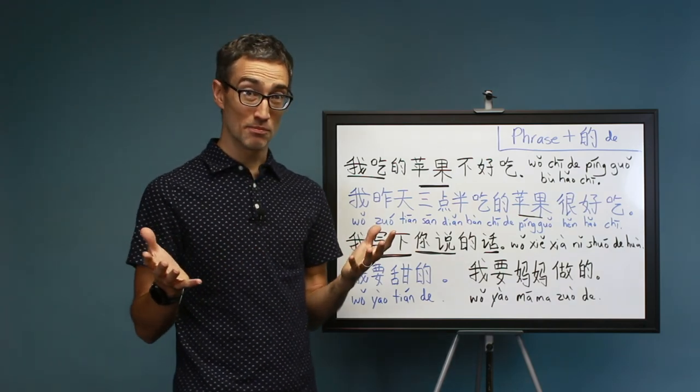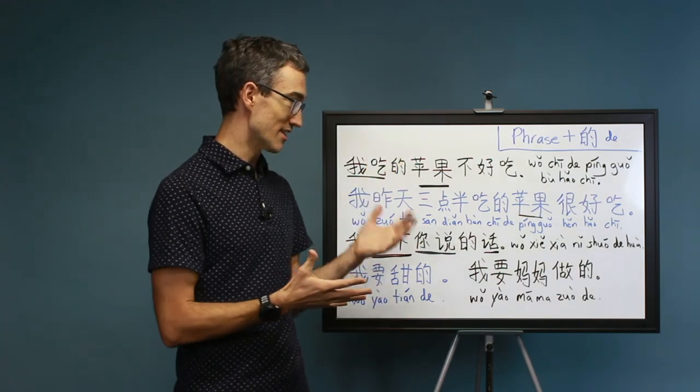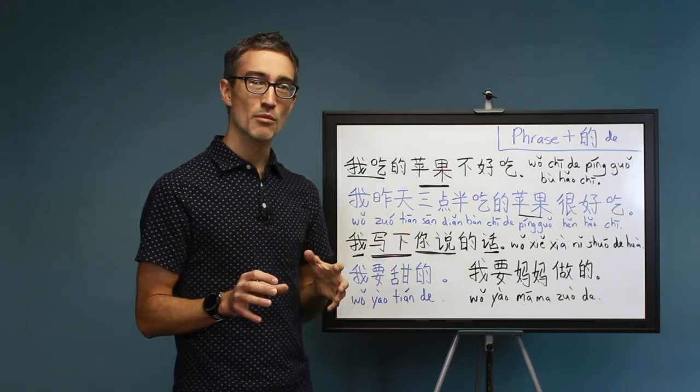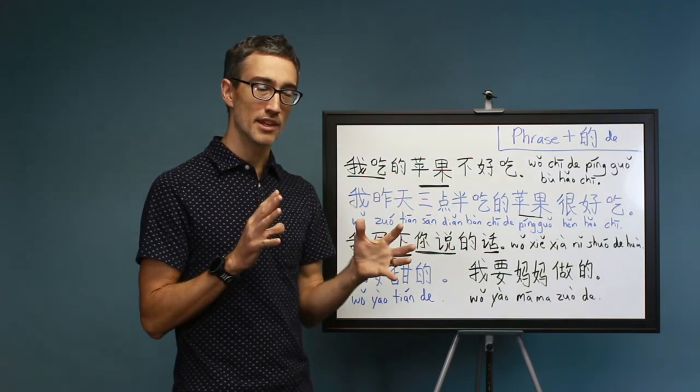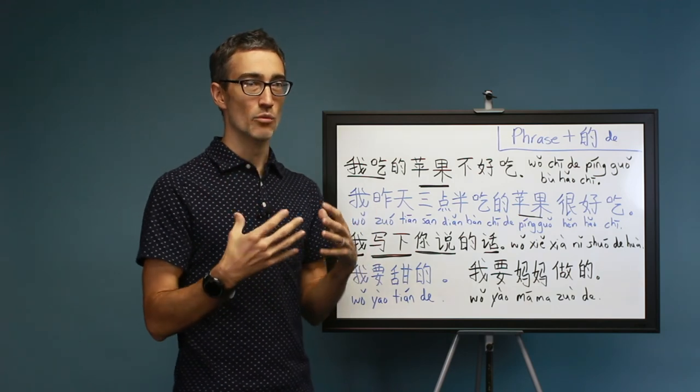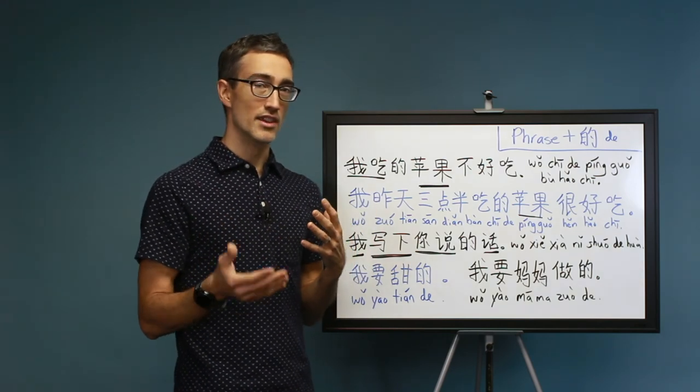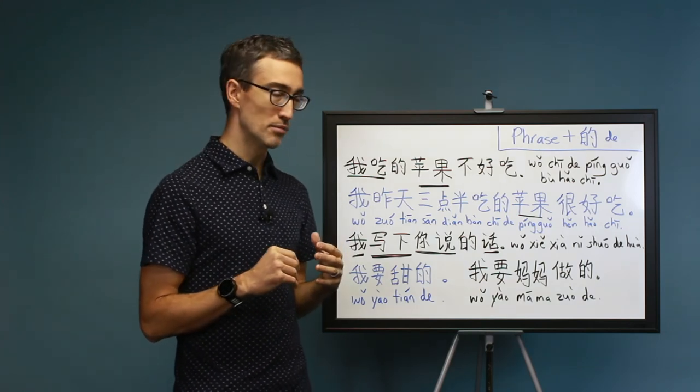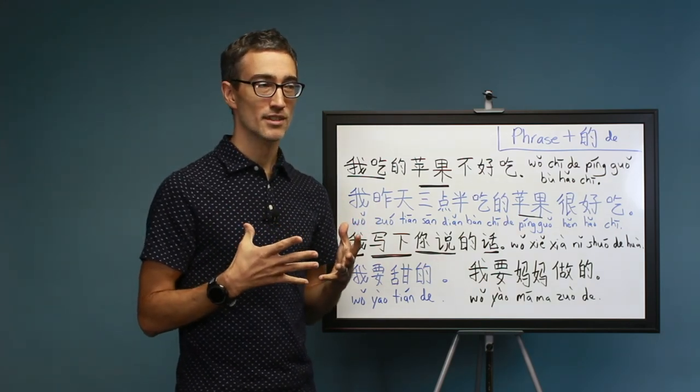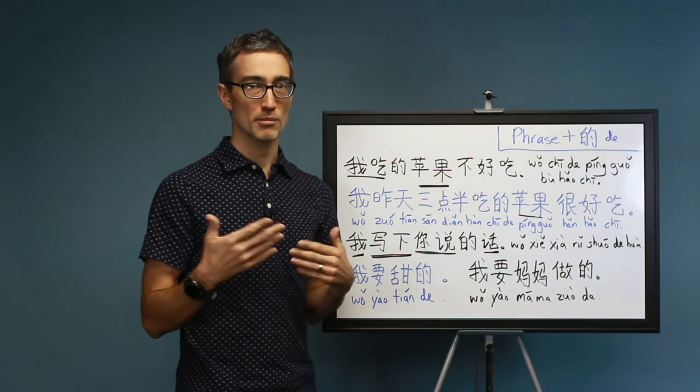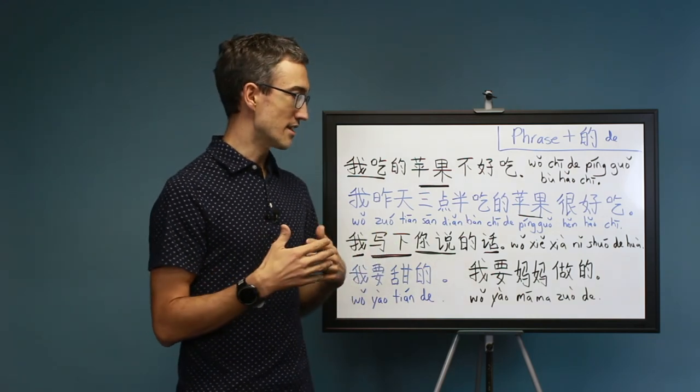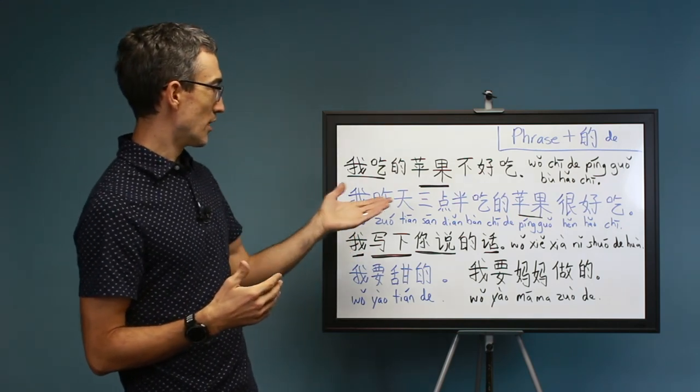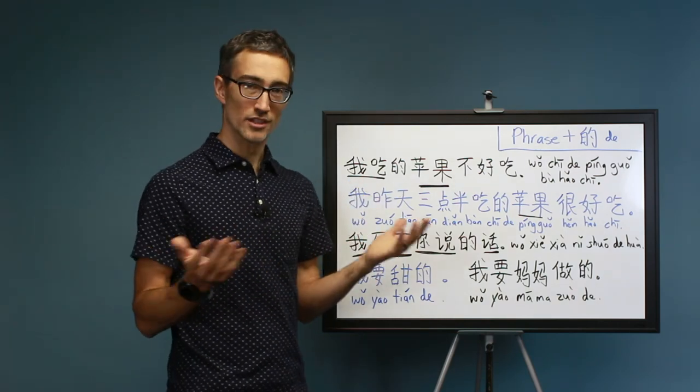So that's a big deal. This whole thing takes some getting used to, but take your time with it. Try to actually figure out what's happening in the sentence and what it means, and then write some examples. You'll see some homework in the description below. But this is a very powerful concept that will allow you to be much more expressive in Chinese and say those complex phrases like, the apple that I ate at 3:30 yesterday was delicious.